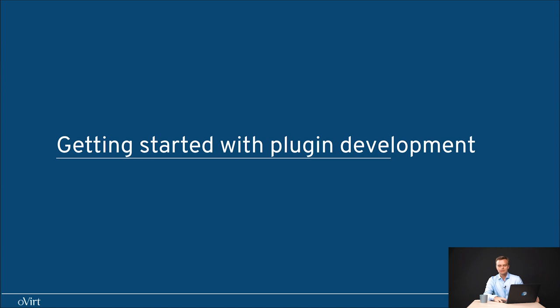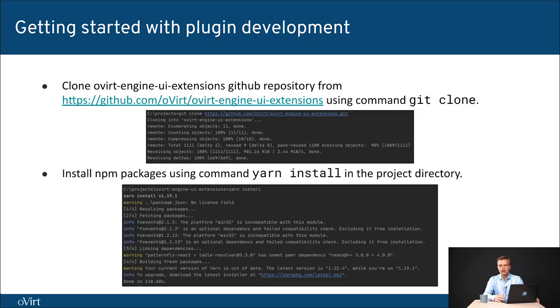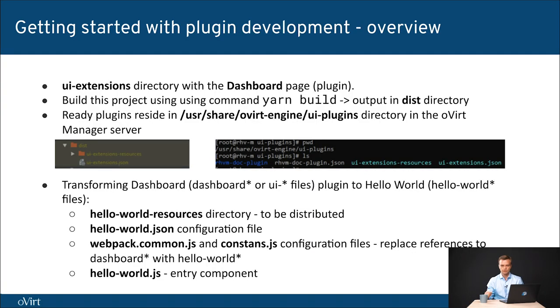Let's start with a simple Hello World example with plugin development. In order to start extending OVirt plugins you need a few tools - obviously some yarn, some Node.js, and git to clone the repository. You need to clone the repository and invoke the yarn install command. This is going to create a set of directories. The project contains an existing dashboard project which we are going to customize later. With the yarn build command you will have output stored in a directory with compiled files and a configuration file. UI extensions resources is a directory and UI extensions JSON is the JSON file with the configuration settings.